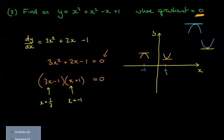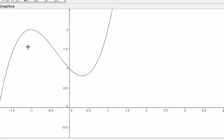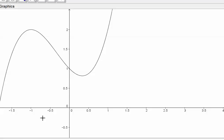I've plotted the graph to verify. At x = −1 there's a local maximum — the tangent at the peak is flat, so the gradient is 0 there. And at x = 1/3 there's a local minimum — the tangent there is also flat. So there are two points on this graph where the gradient equals 0.